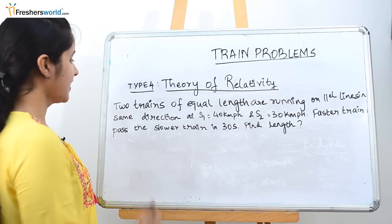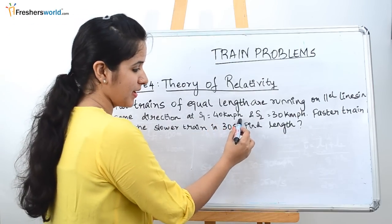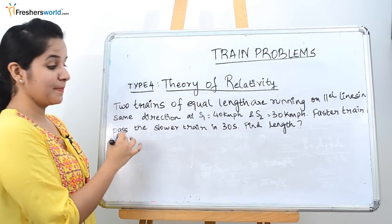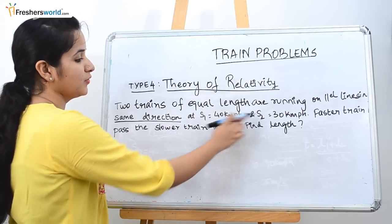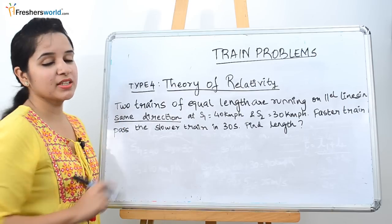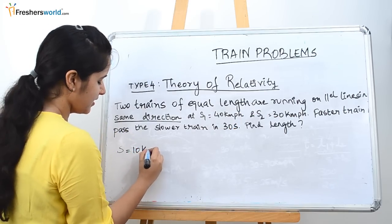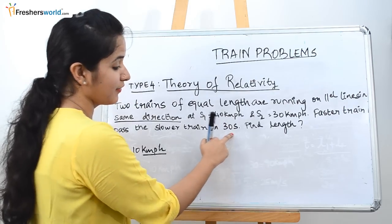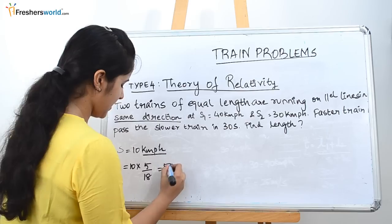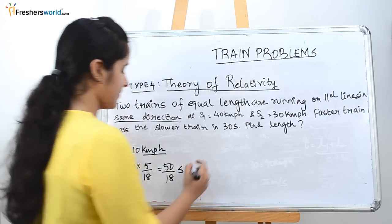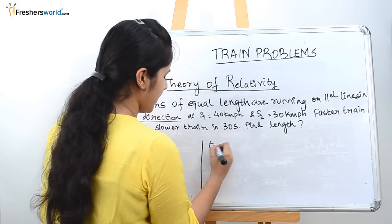Problem 2: two trains of equal length are running on parallel lines in the same direction with speeds of 40 km/h and 30 km/h. The faster train passes the slower train in 30 seconds. Find the length of the train. Given data: speeds are 40 km/h and 30 km/h, moving in the same direction, so we subtract: 40 minus 30 = 10 km/h. Since time is in seconds, convert to m/s: 10 multiplied by 5/18 = 50/18 m/s. Time taken to pass = 30 seconds.